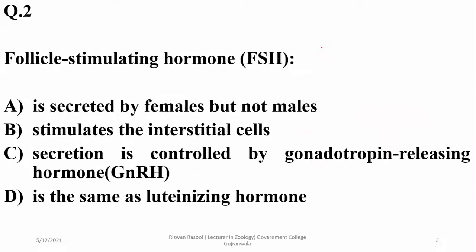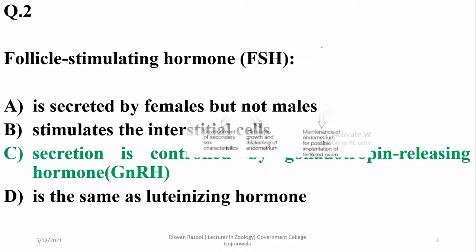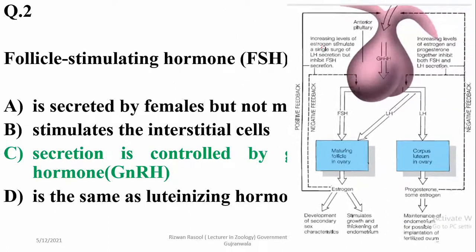Question number two: follicle stimulating hormone is secreted by males as well as females. Option A is a wrong statement — it does not stimulate the interstitial cells. Its secretion is controlled by gonadotrophin releasing hormone, so option C seems the better answer, because gonadotrophic releasing hormone affects FSH as well as LH.